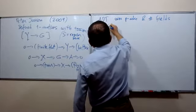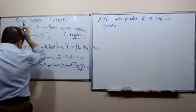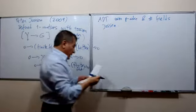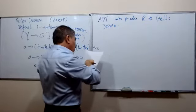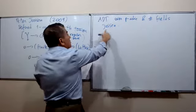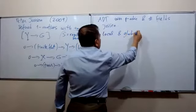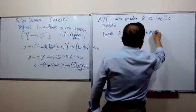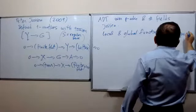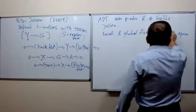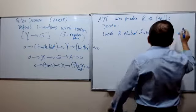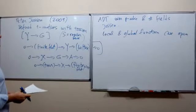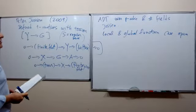Joseph proved a lot of arithmetic duality theorems for these 1-motives with torsion, but only over p-adic and number fields. His work has not yet been extended to local and global function fields, and this is at least one open problem.